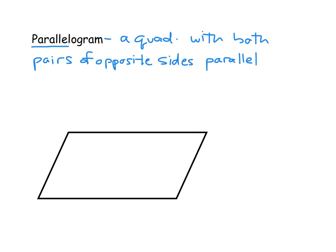Let's mark up what that would mean for the quadrilateral here. Both pairs of opposite sides would be parallel — this side here would be parallel to the opposite side, so we'll use single arrows for that. Then this side up here would be parallel to this side here, and we'll use double arrows to indicate that. So that's all a parallelogram is: a quadrilateral where both pairs of opposite sides are parallel.